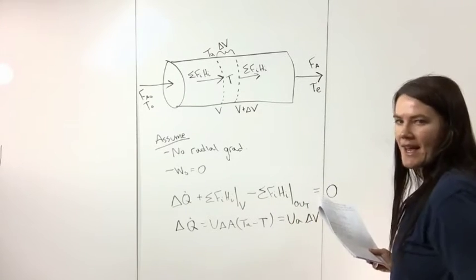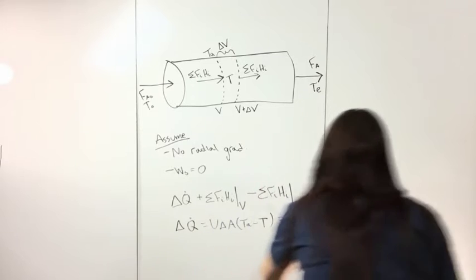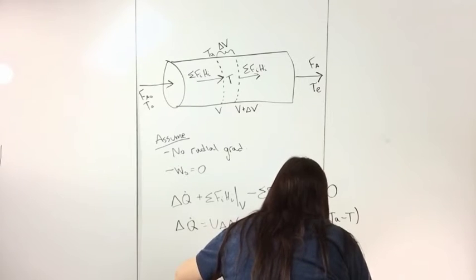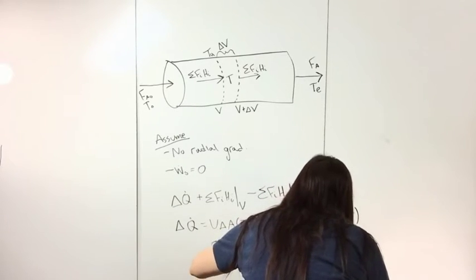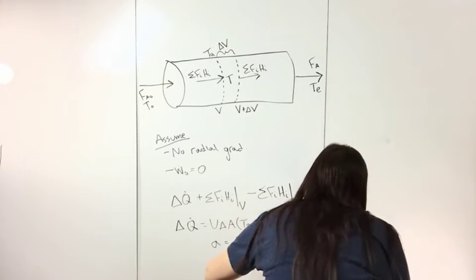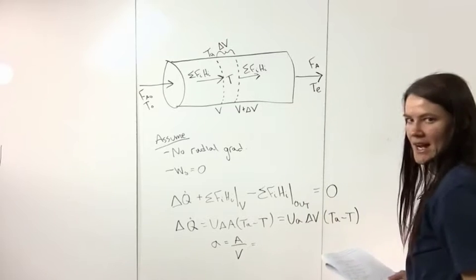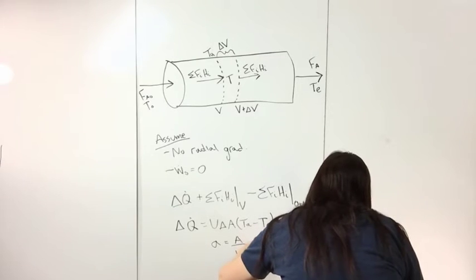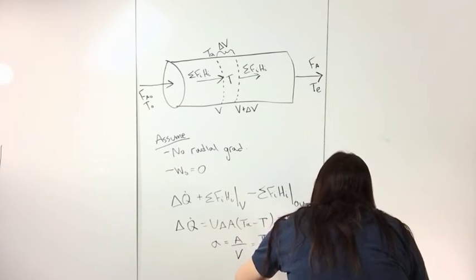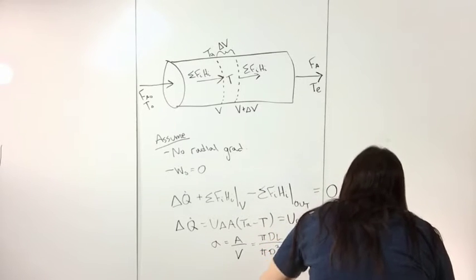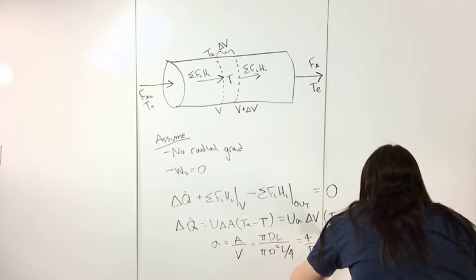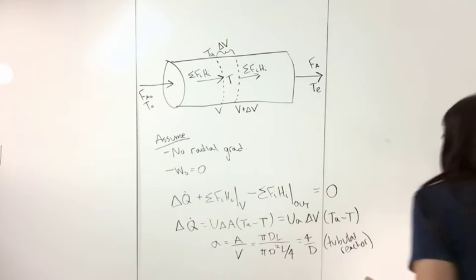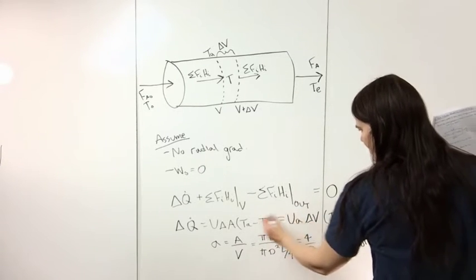Looking at A — the area-to-volume ratio — for a tubular reactor this is pi D L divided by (pi D squared L over four), which simplifies to four over D, four over the diameter. We substitute this back into the heat transfer expression.